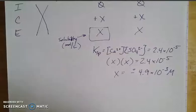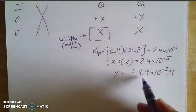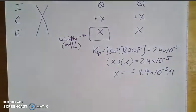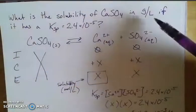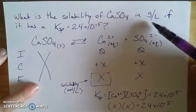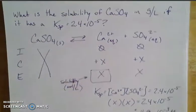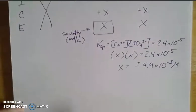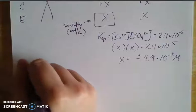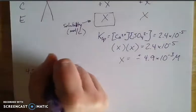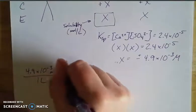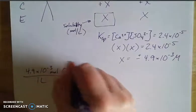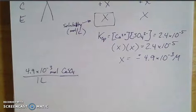So that means that our concentrations are positive 4.9 times 10 to the negative third molar. And now the original question asked for the solubility in grams per liter. So we need to do some conversion here. We have 4.9 times 10 to the negative third moles per liter of our calcium sulfate.